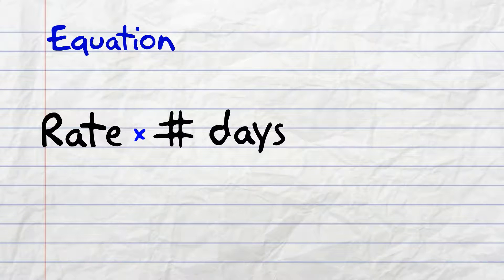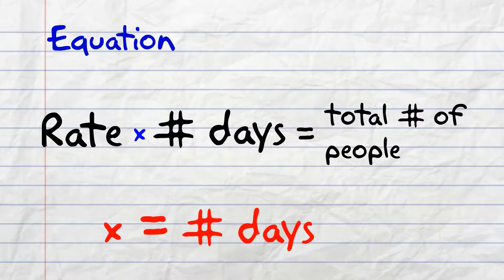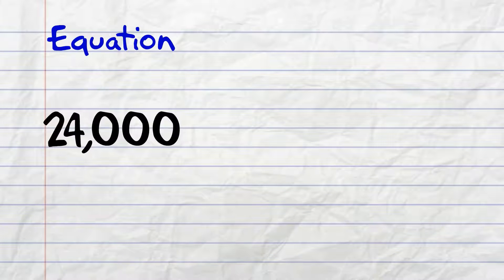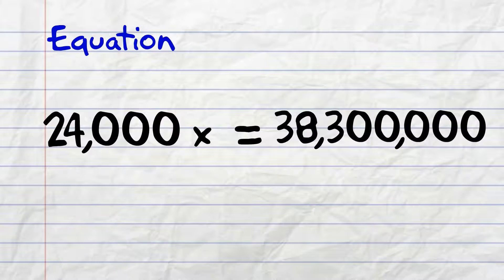The equation we're going to use is rate times the number of days equals the total number of people. Let x be the total number of days. That gives us 24,000 times x equals 38,300,000.